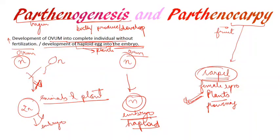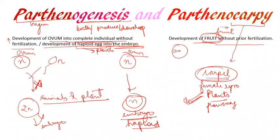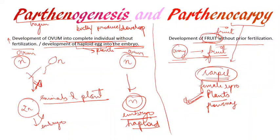Parthenocarpy is the development of fruit without prior fertilization. As we know, the ovary gets converted into the fruit after fertilization, but in parthenocarpy no fertilization occurs and the ovary directly converts into fruit. So the key difference is: in parthenocarpy we consider the development of fruit without fertilization, while in parthenogenesis we consider the development of an individual without fertilization.